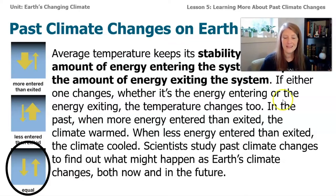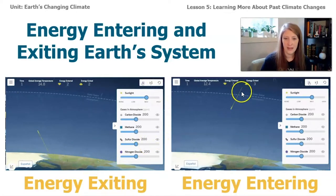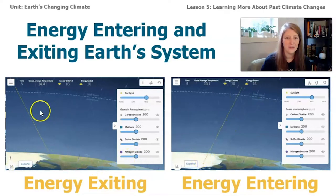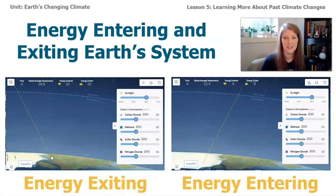In lesson four, we also took a look at the sim. When we were looking at the sim, we discovered that you can see energy coming into the system and energy exiting the system, shown by energy arrows. What we just read in the article explains that when these things change, the global average temperature can change. And when they stay the same, you can have equilibrium.